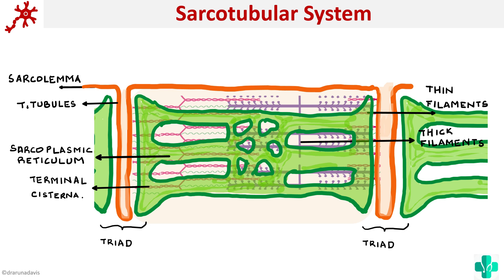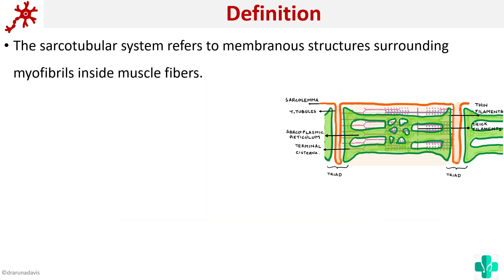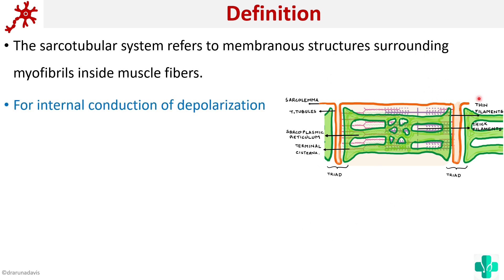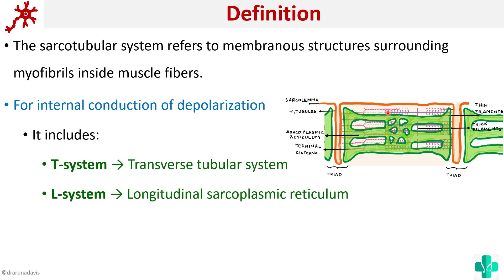The sarco tubular system refers to the membranous structures surrounding the myofibrils inside muscle fibers. It is basically for internal conduction of depolarization. Once a depolarization reaches the motor end plate, we want the depolarization to go inside the muscle fiber — that is why we have these invaginations, the T-tubules.